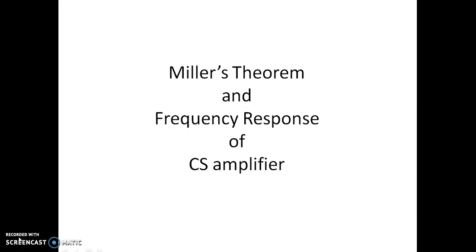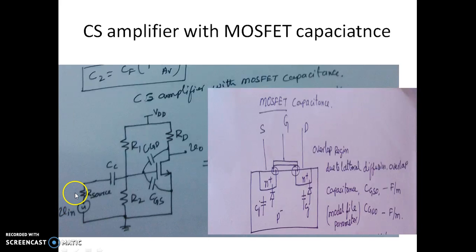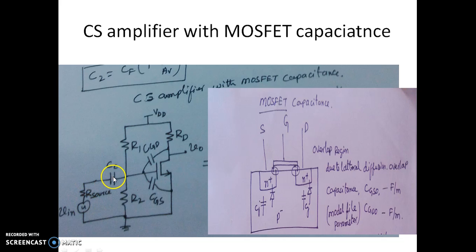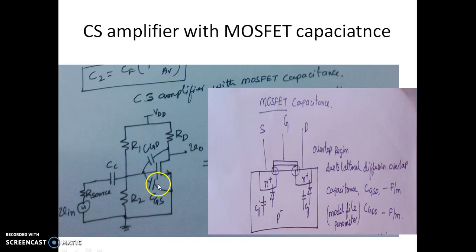In this video we shall see Miller's theorem and the frequency response of a CS amplifier. This is a CS amplifier with MOSFET capacitances. We have an input voltage, a source impedance Rs, a coupling capacitor, biasing resistors R1 and R2, and load resistor RD. CGD represents the capacitance between gate and drain, and CGS represents the capacitance between gate and source.